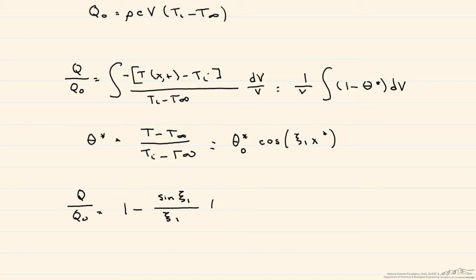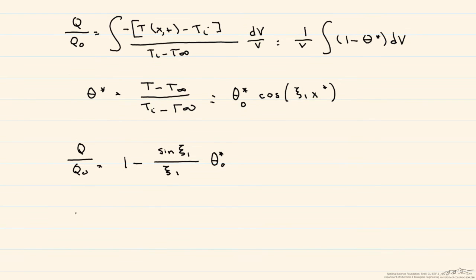So our theta star, and again this is considered the midplane temperature, is equal to C one exponential minus this eigenvalue squared times the Fourier number.